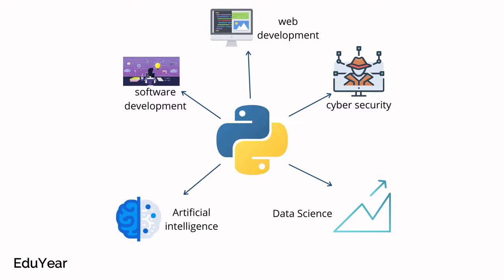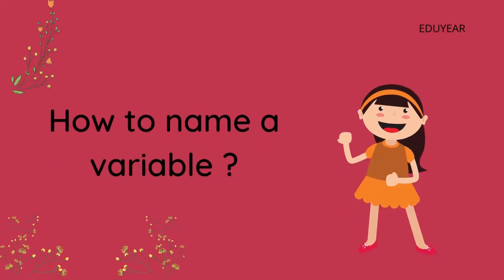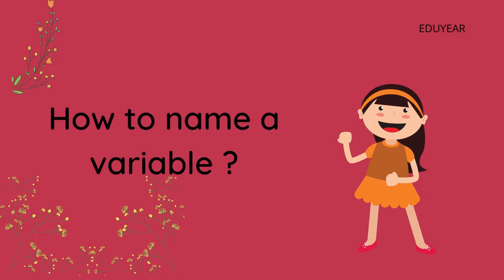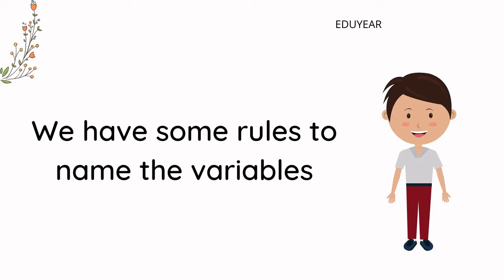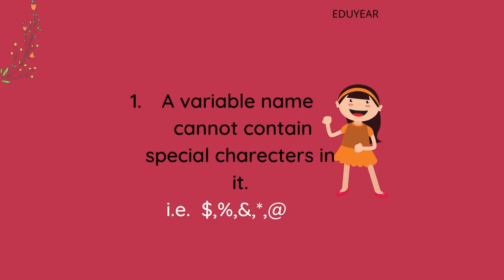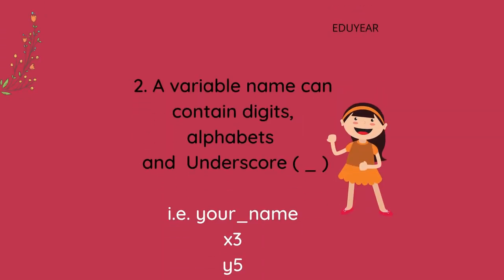How to name a variable? We have some rules to name the variable in Python. First, a variable name cannot contain special characters in it. A variable name can contain digits, alphabets, and underscore.